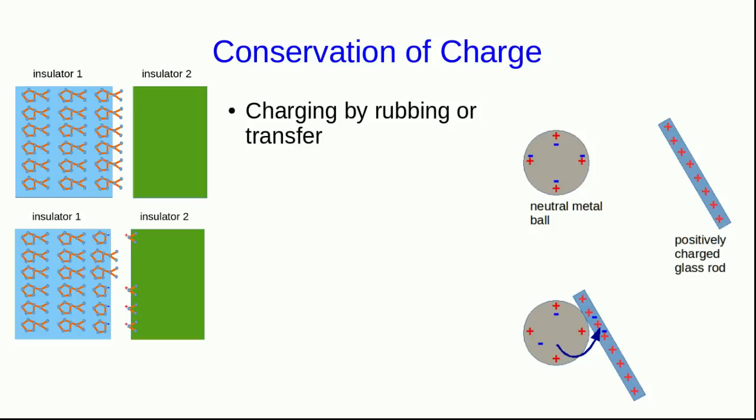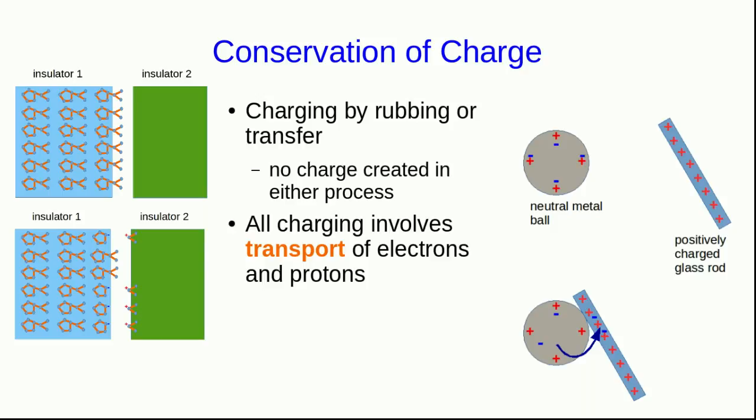So all the charging we've seen is either by rubbing, or the very similar pulling apart of things that are stuck together, or by charge transfer. And the key thing to notice is that no charge is actually created in either process. All we're doing is transporting electrons and protons around. And note that we rarely transport just protons. The protons are being transported because they're in the nuclei of atoms that are parts of molecular ions. And so overall, charge is conserved in all of these processes.